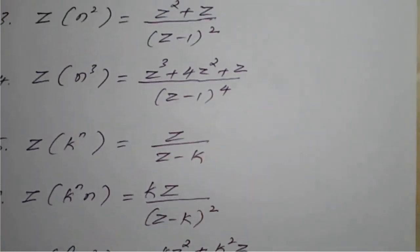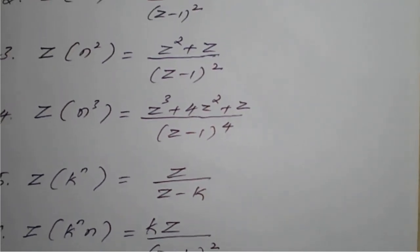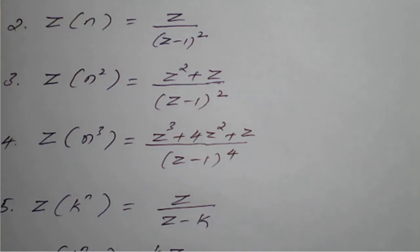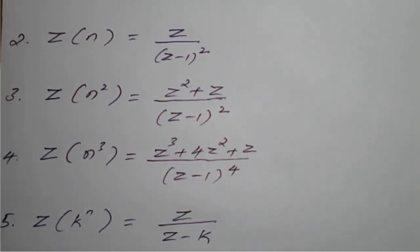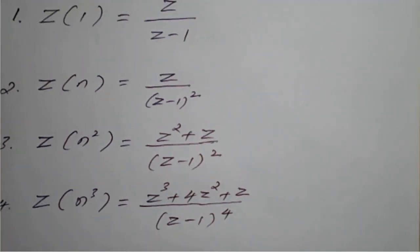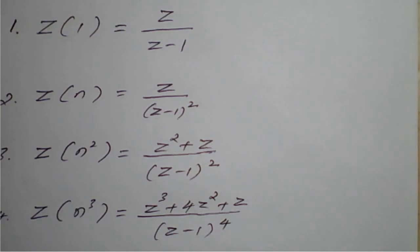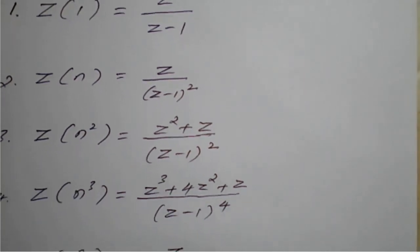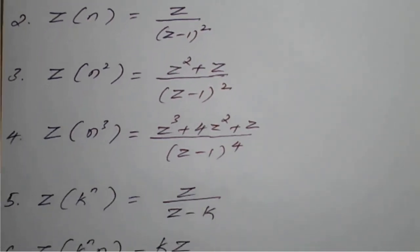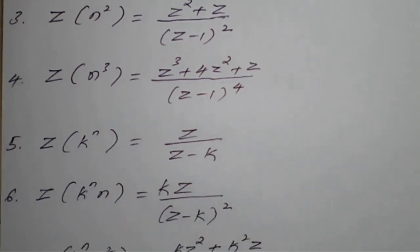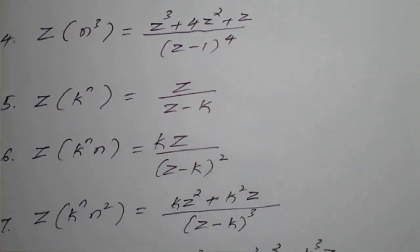Your duty is to remember these standard Z transforms and, with respect to the damping rule, that is, if you multiply a constant K raised to n, what happens. In this way these Z transforms are simplified. The details we have already seen in previous lectures, so remember all of these and we will work out problems using them.